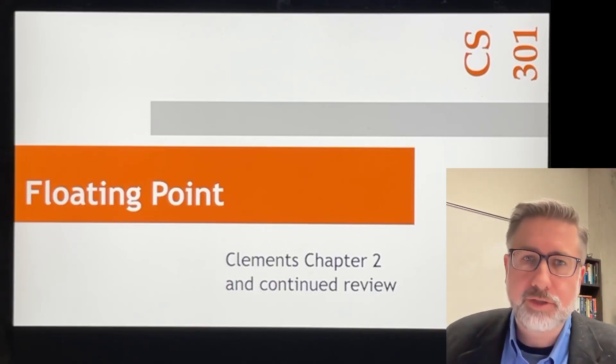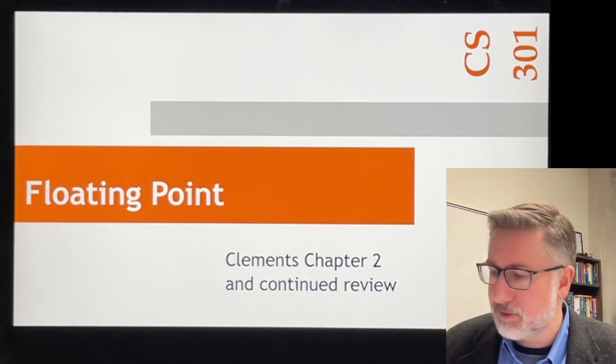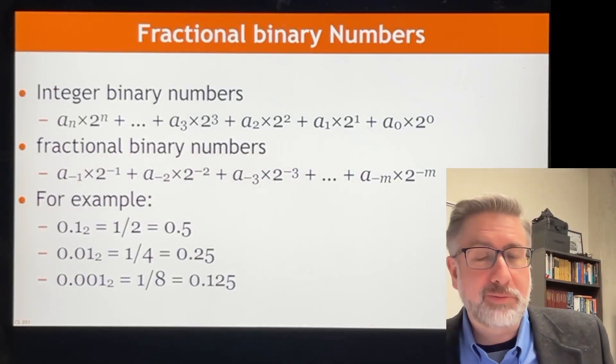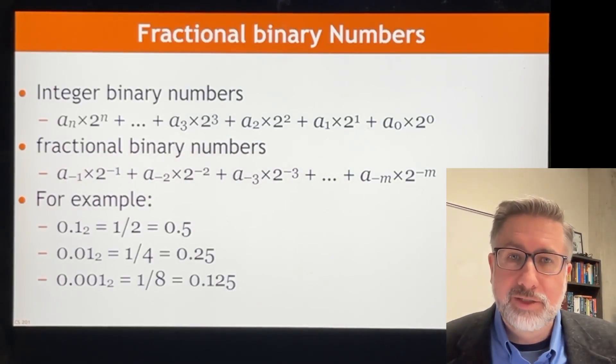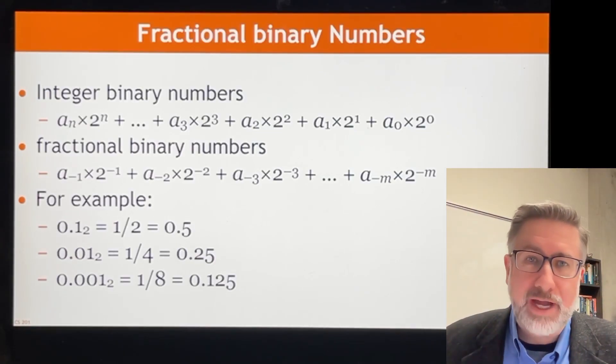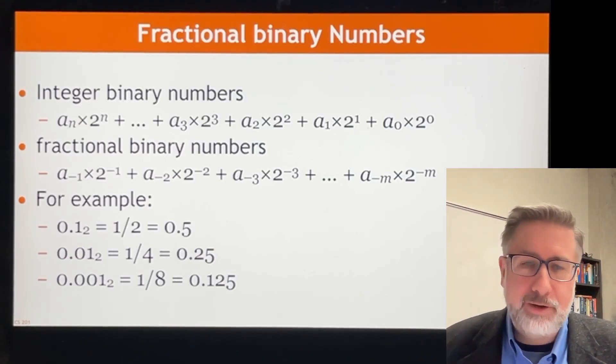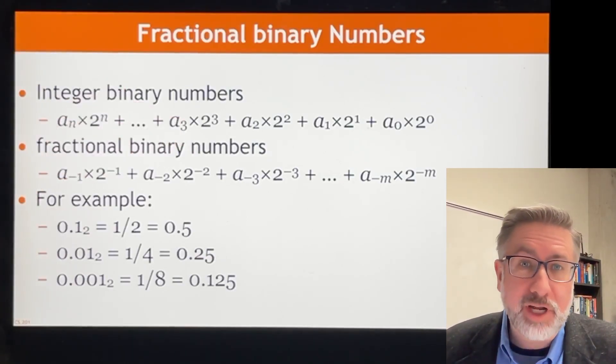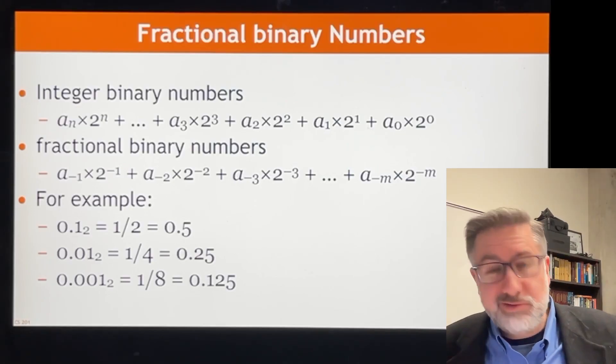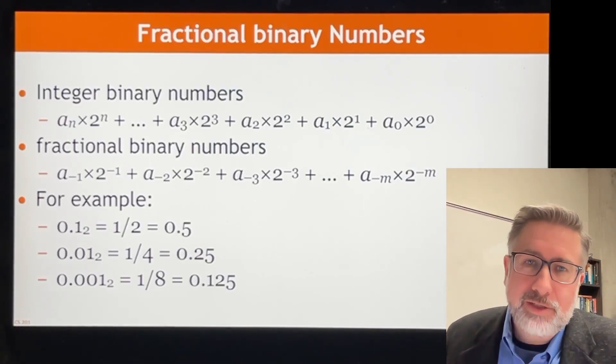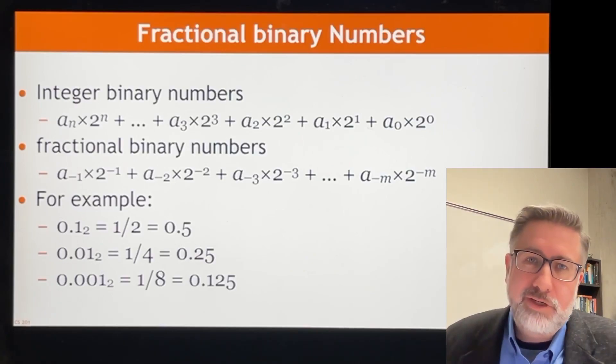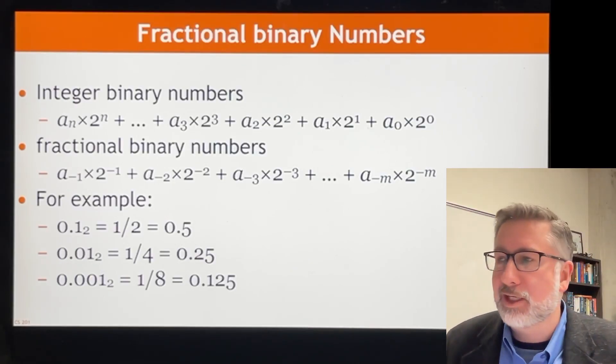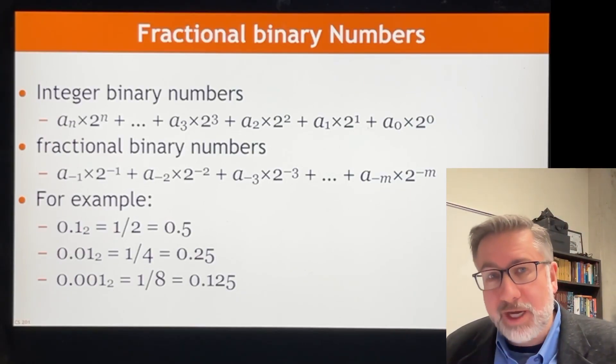As a reminder, binary numbers are based on a numerical system where the radix is 2, so this is 2 to the power of n being the fundamental base unit for the way that we represent our numbers, just like in base 10 it's 10 to the power of something. So a regular representation, 386 is 3 times 10 to the 2 plus 8 times 10 to the 1 plus 6 times 10 to the 0.